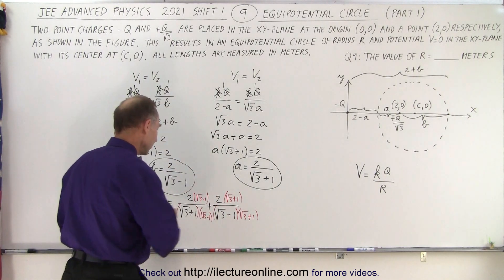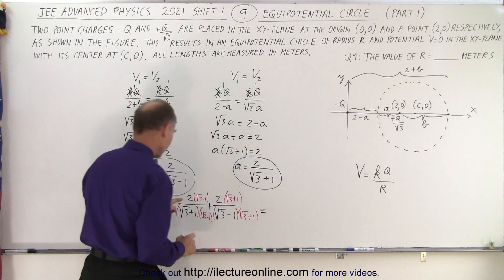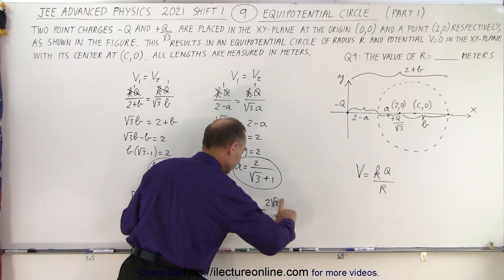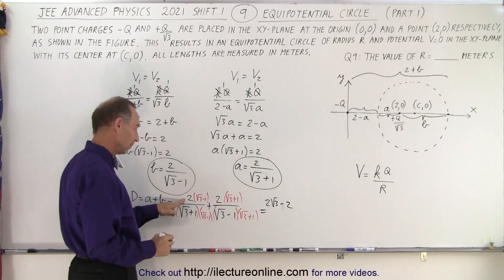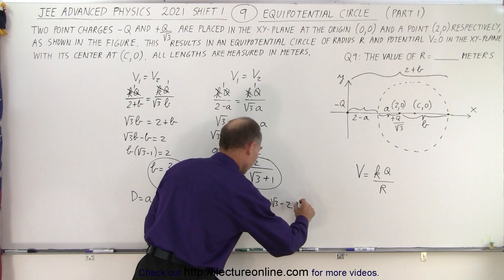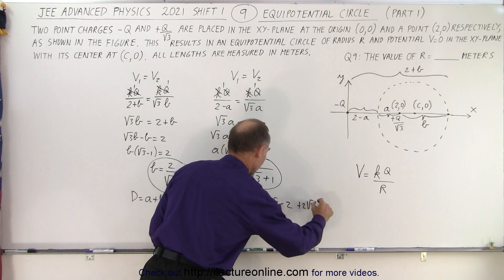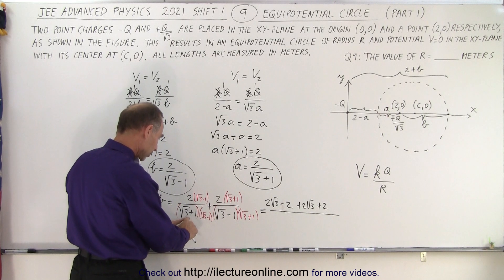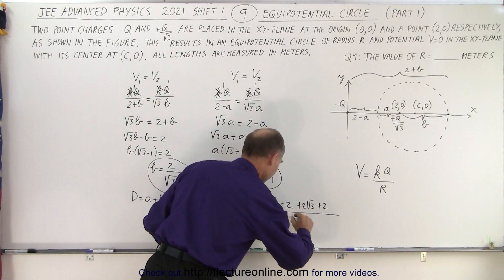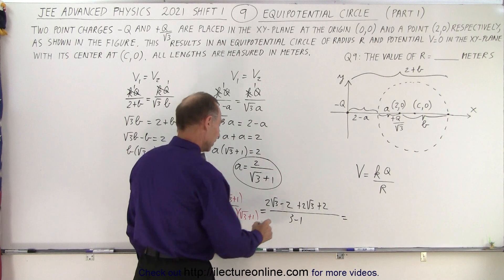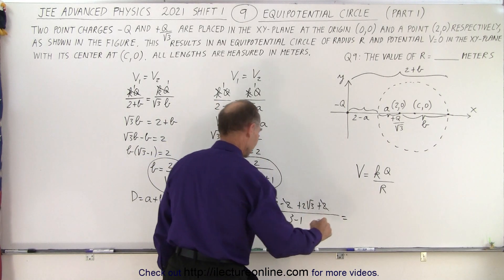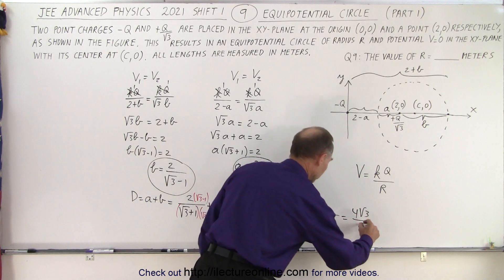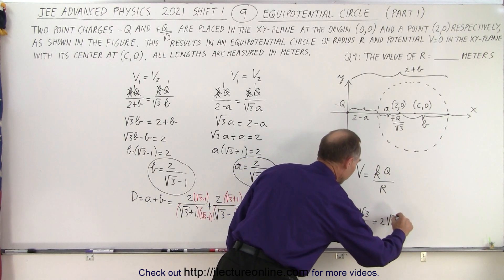In the numerator we get 2 times (square root of 3 minus 1) plus 2 times (square root of 3 plus 1), all divided by (3 minus 1). Simplifying: the minus 2 and plus 2 cancel out, leaving 4 times the square root of 3 in the numerator divided by 2, which gives 2 times the square root of 3. That is the diameter.